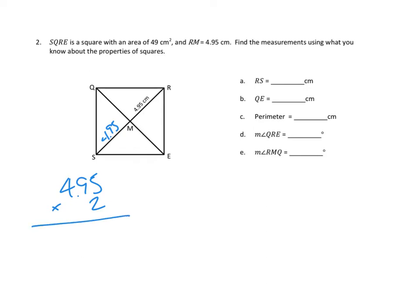Let's work that out. Two times 5 hundredths is 10 hundredths. Two times 9 tenths is 18 tenths, plus 1 more is 19 tenths. Two times 4 ones is 8 ones, plus 1 more is 9 ones. Putting the decimal back in, that line segment RS is 9.9 centimeters. And that makes sense — it's twice as long as this segment right here.